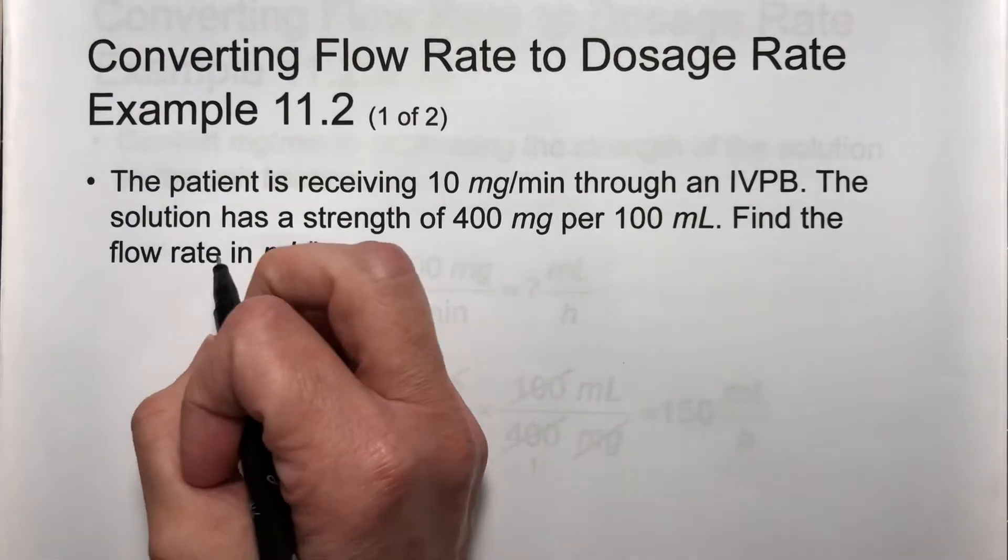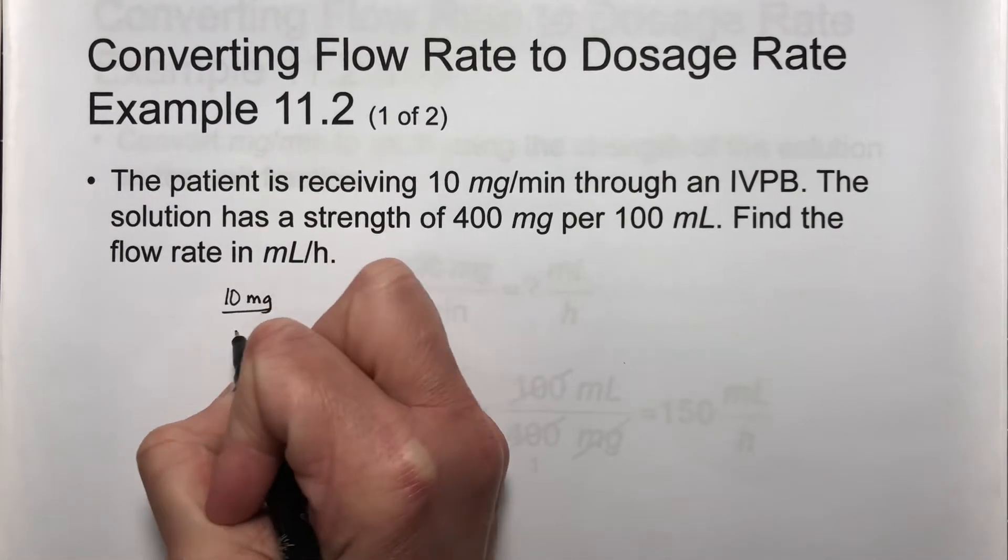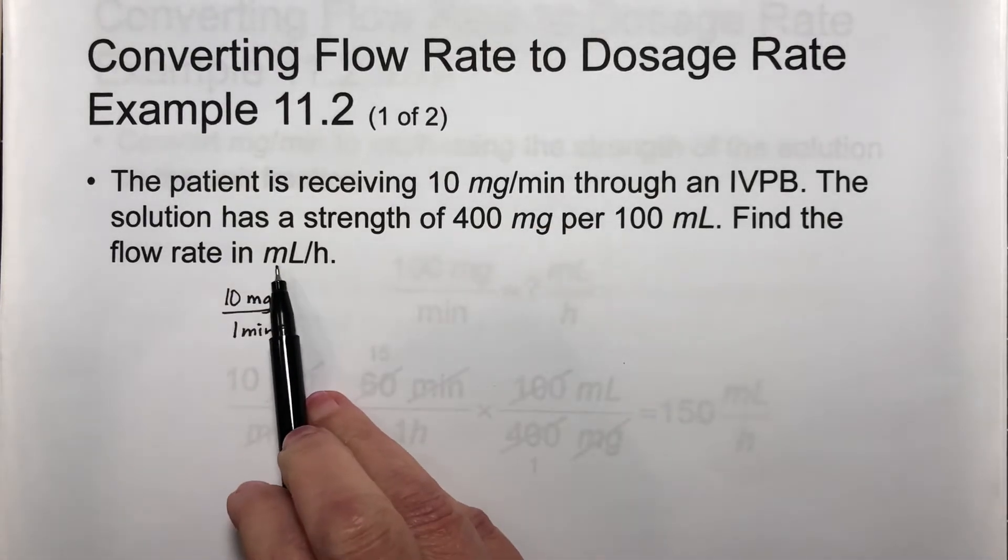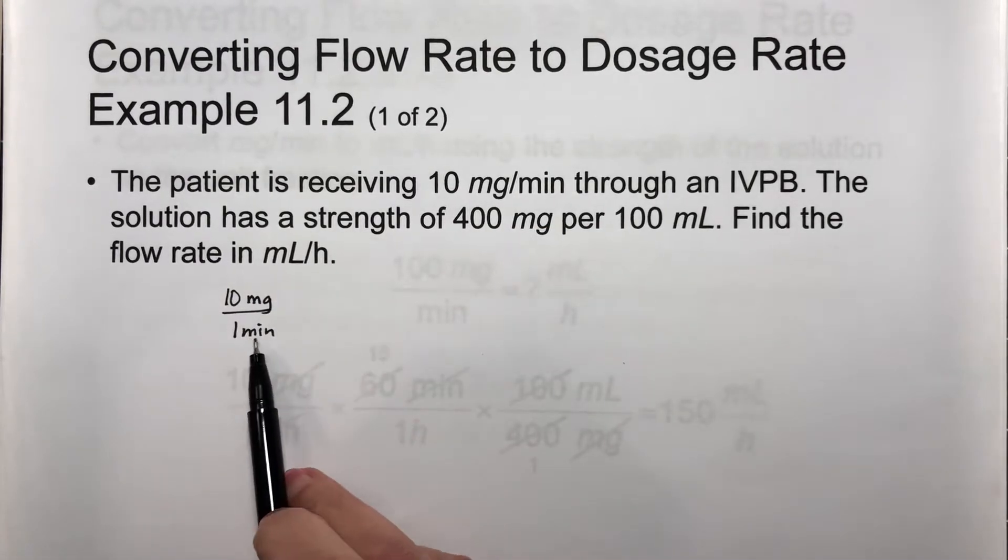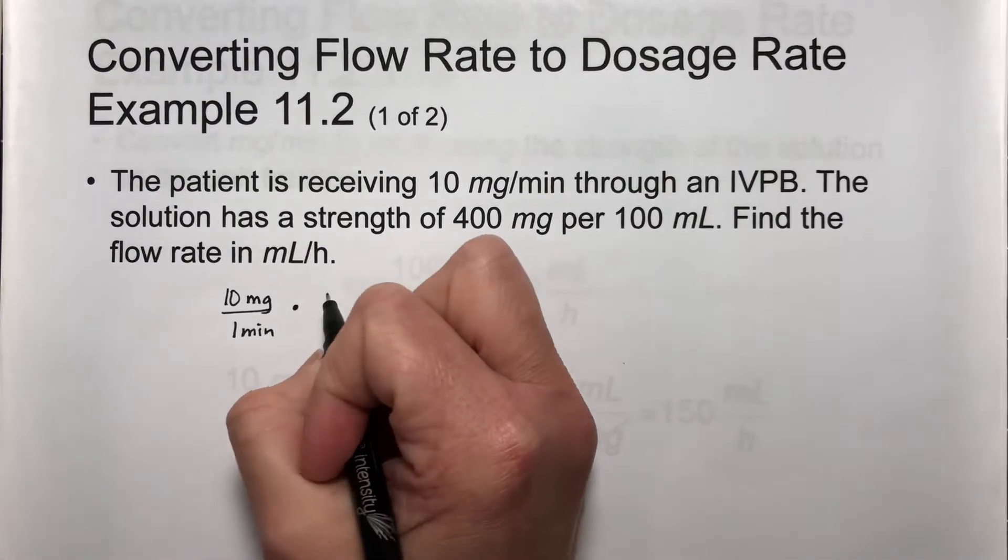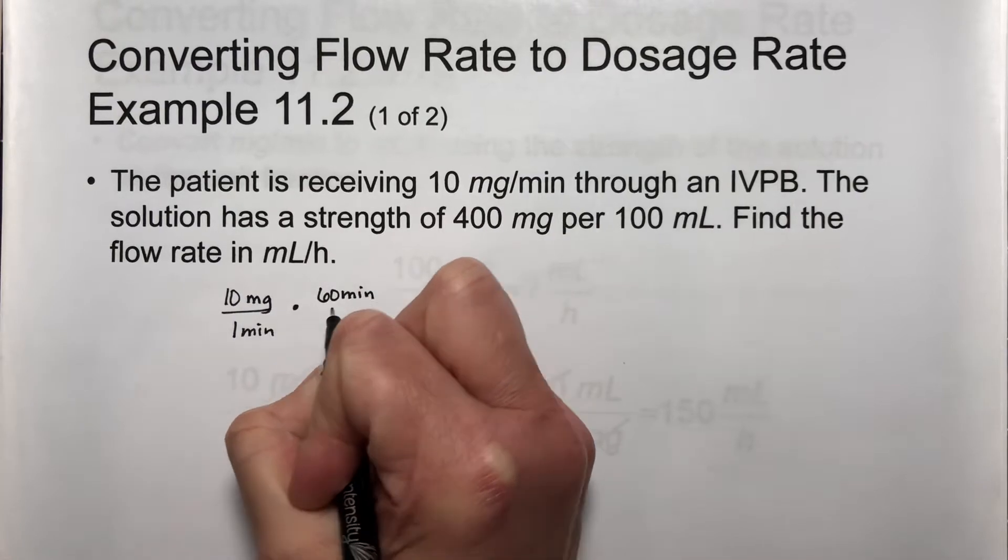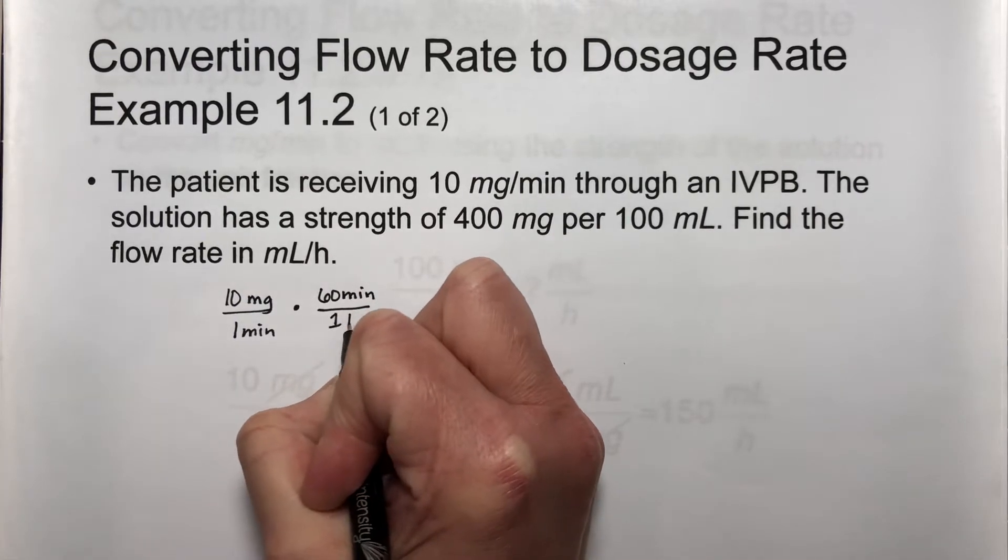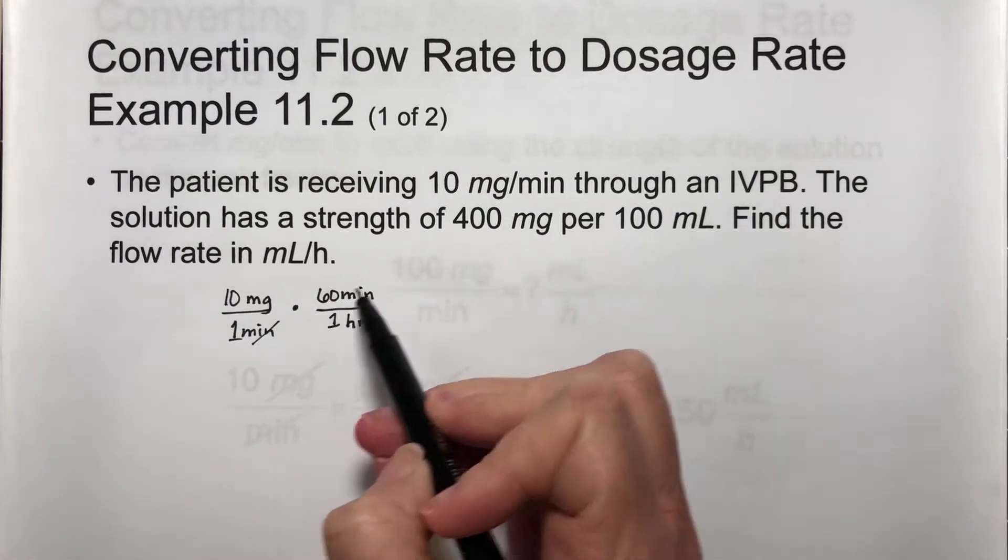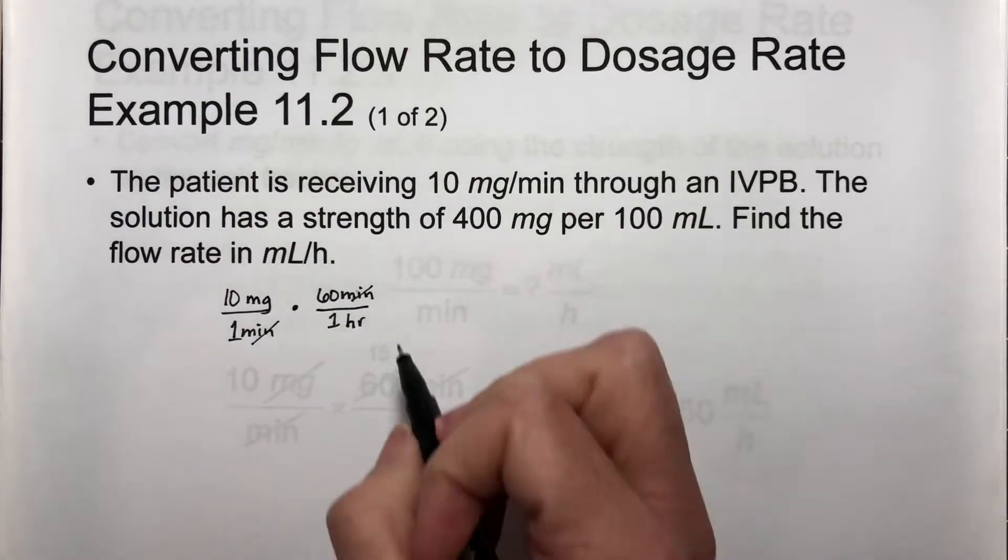Let's start off with the first part. We have 10 milligrams for one minute, and I'm supposed to end up in milliliters per hour. I have minutes, I need hours. Let's go ahead and do that conversion. If I multiply here, there are 60 minutes in one hour. I did it this way so that my minutes will cancel out, and now I have hours in the bottom, which is what I want to end up with.